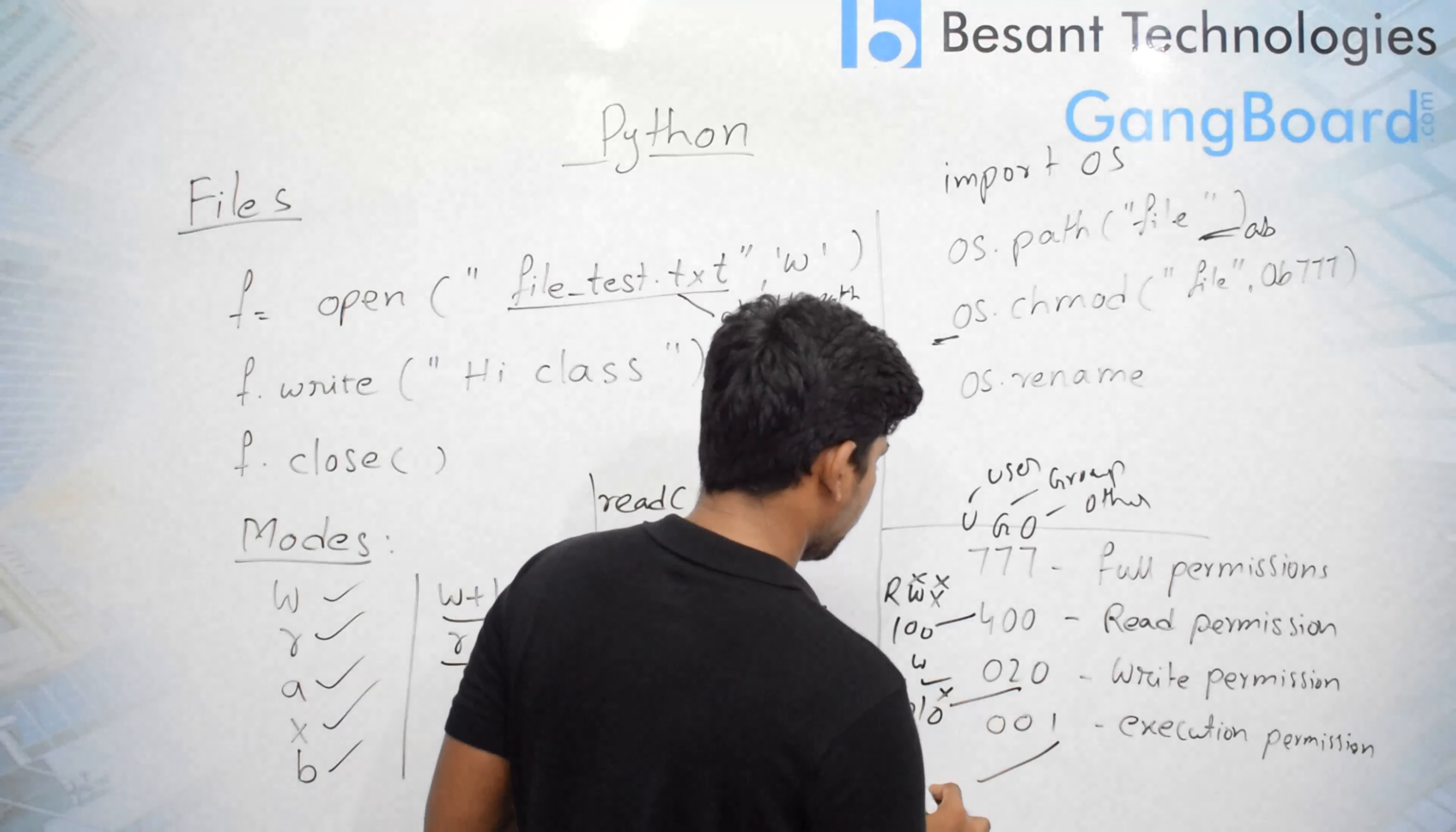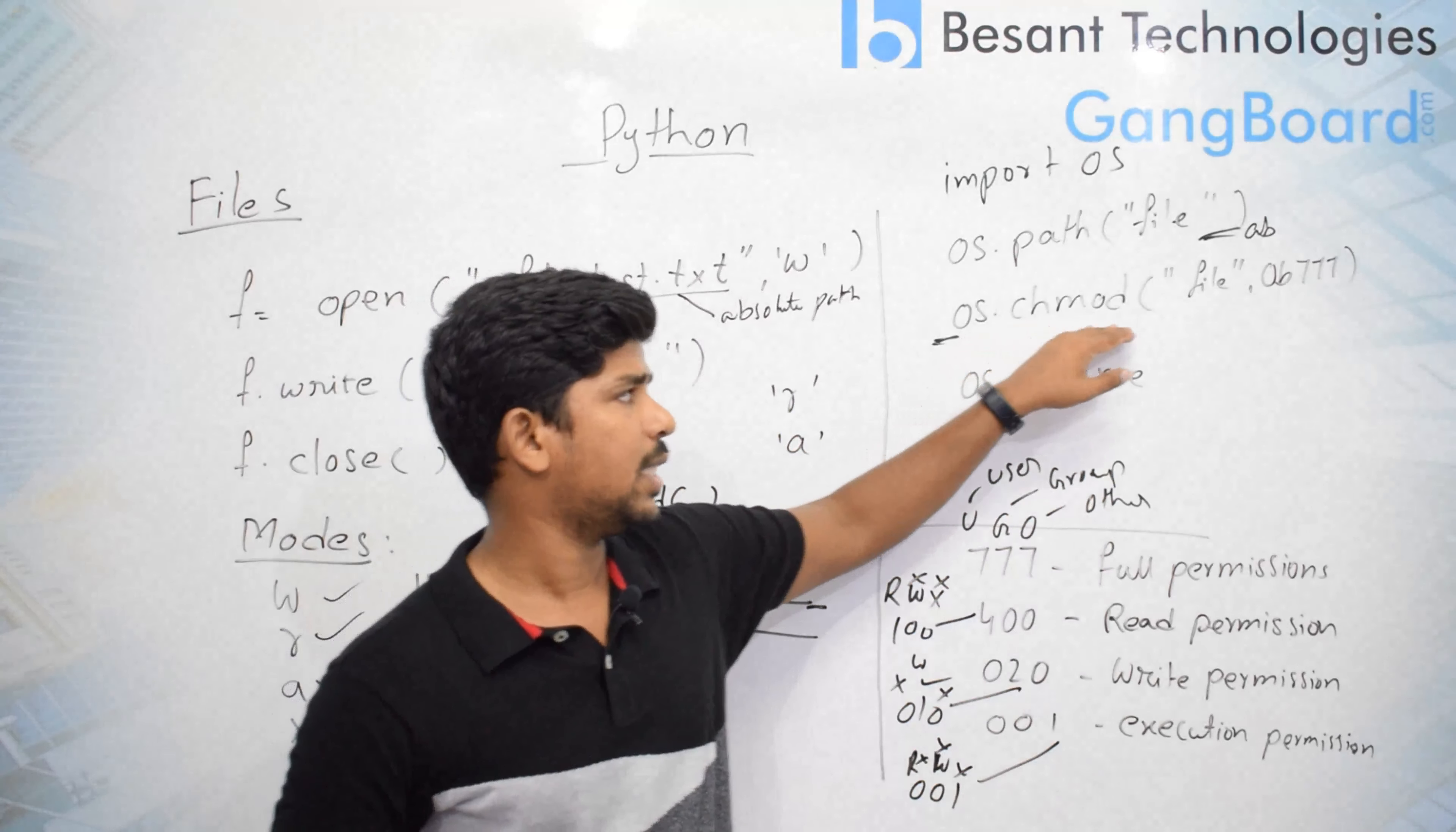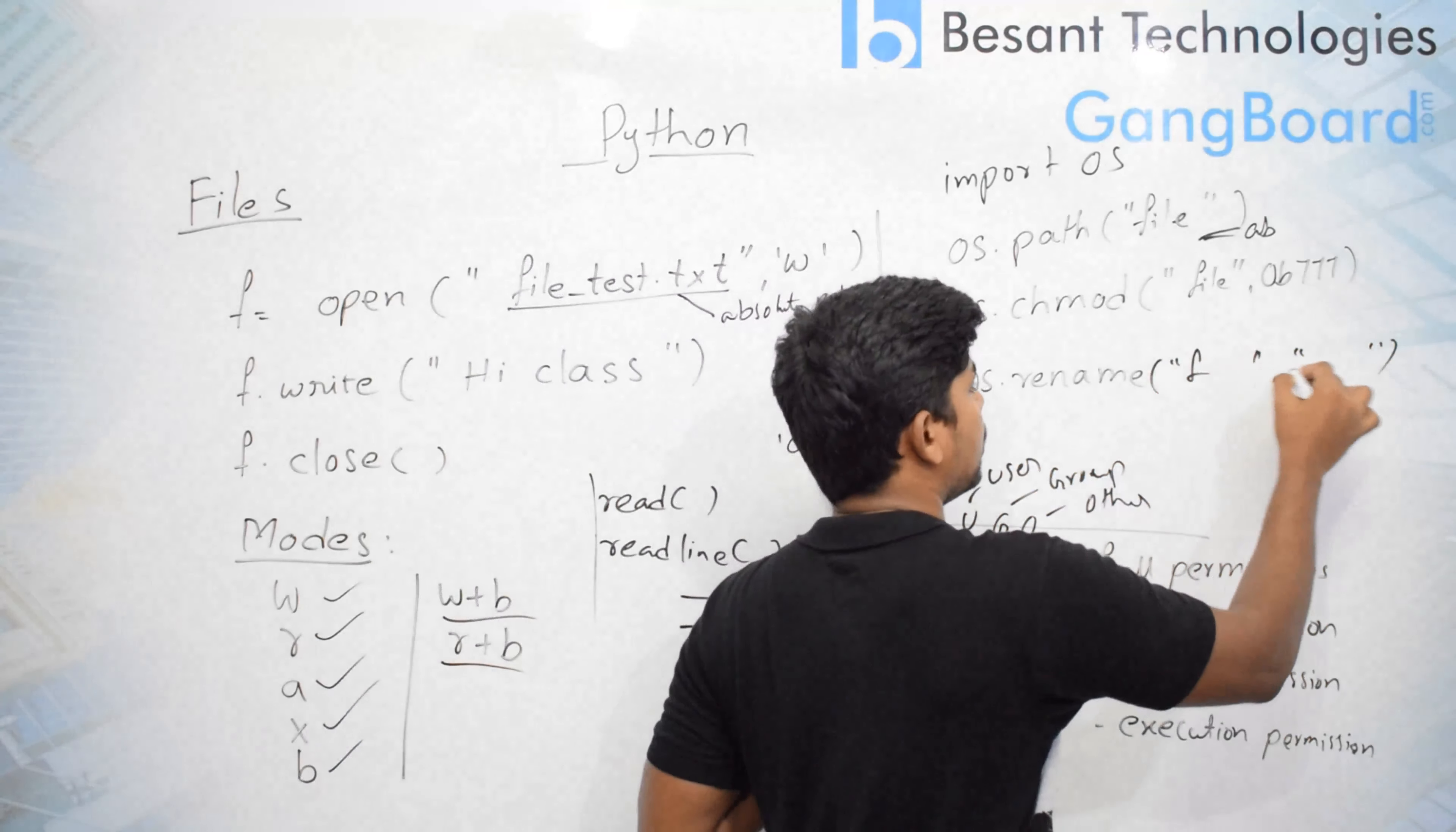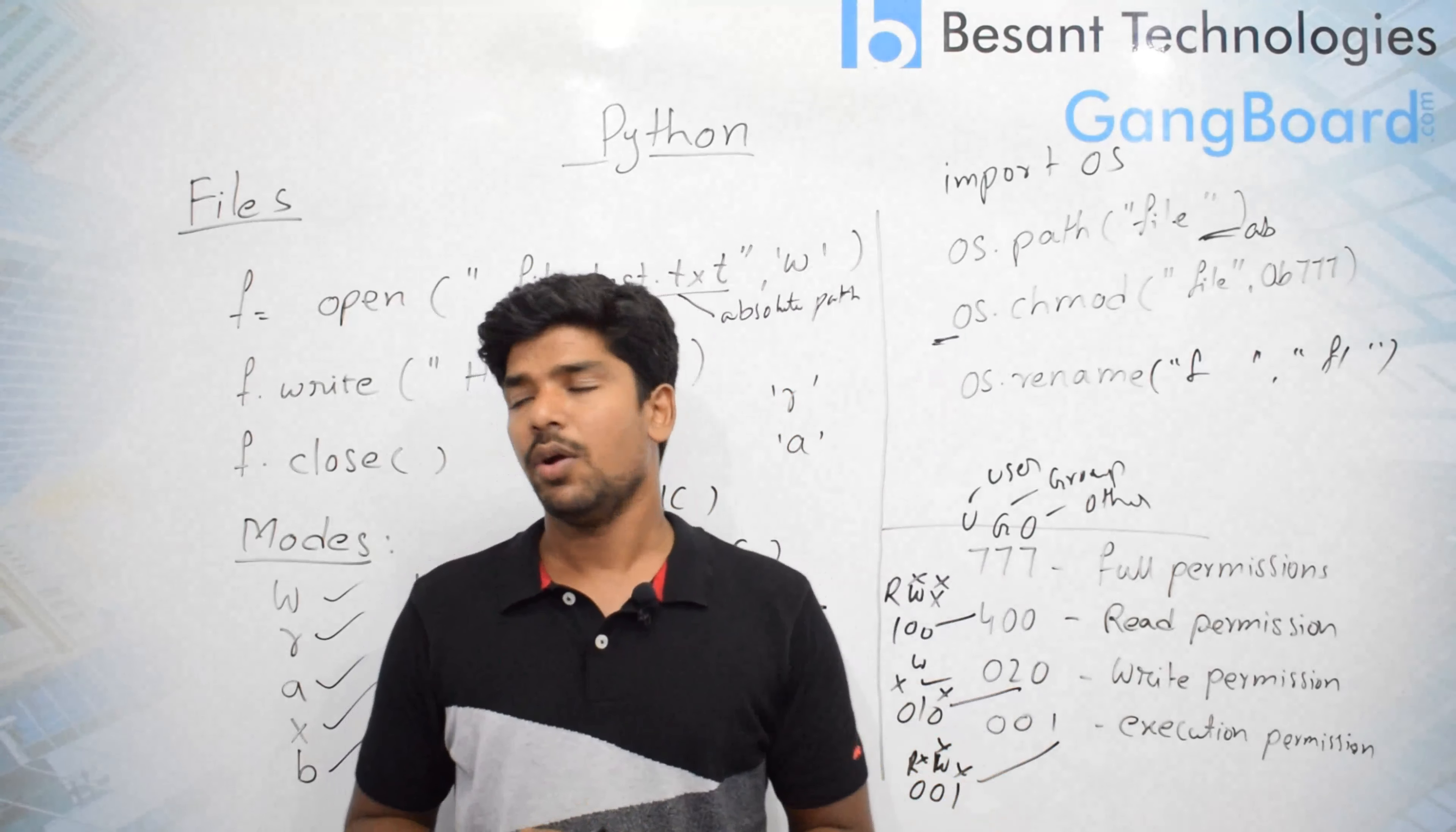What is one? So I am giving only execution permission. Read permission and write permissions are not given. We can set the permissions to a file. For that we need to use os.chmod file and the permission we need to give. Os.rename - if you want to rename some file, you can give the file name here and the new name here. By this we have some additional functions also which you can go through in os.filemod methods.